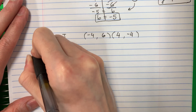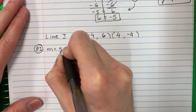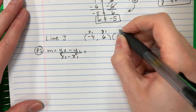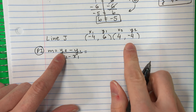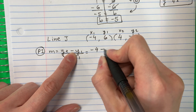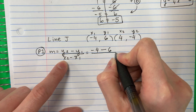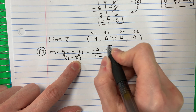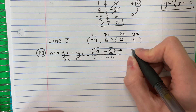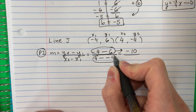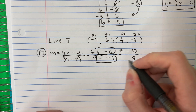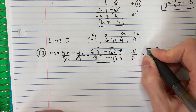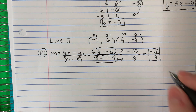Part one: M equals Y2 minus Y1 divided by X2 minus X1. X1 is negative four, Y1 is six, X2 is four, Y2 is negative four. So: negative four minus six is negative ten, divided by four minus negative four which is eight. Negative ten divided by eight in the calculator gives negative five-fourths. That is my M.